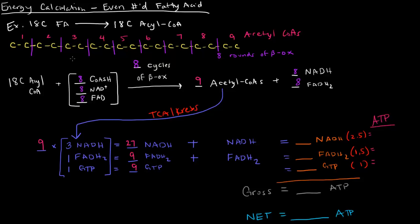We also have to total all these NADH's and FADH2's and GTP's that we have, because they're all valued at some sort of energy. These NADH's and FADH2's, we're going to add them. So we have 8 NADH's, 8 FADH2's. If we total this all up, we have 35 NADH's total, 17 FADH2's, and 9 GTP's.